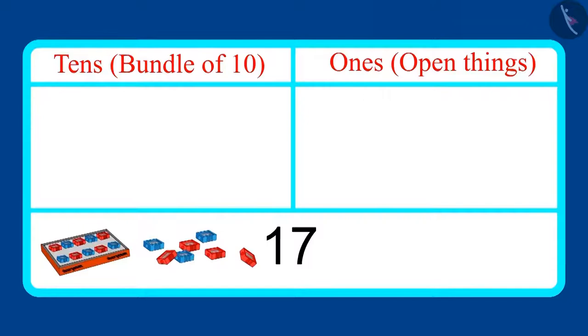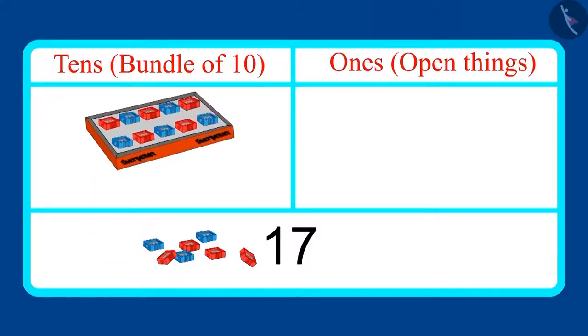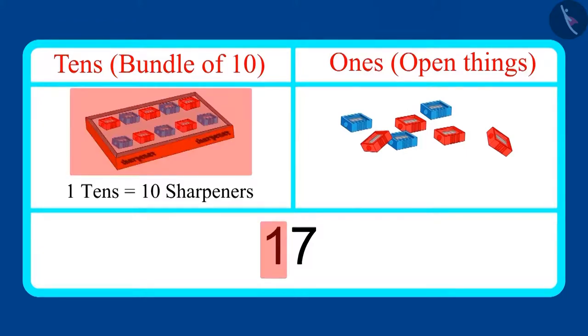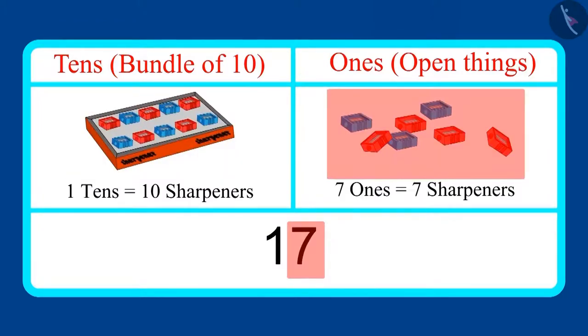Come on now. Let's look at the number of sharpeners, which is seventeen. If we make one bundle of ten in this, then seven more sharpeners remain, which means it has one tens and seven ones.